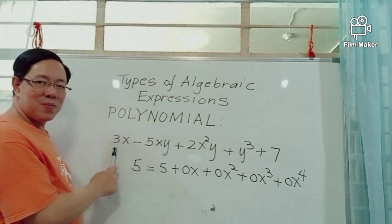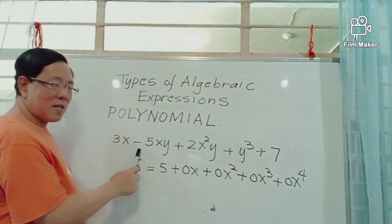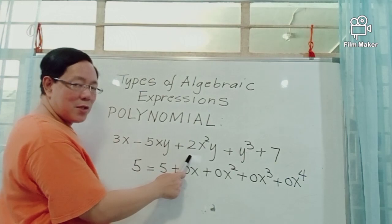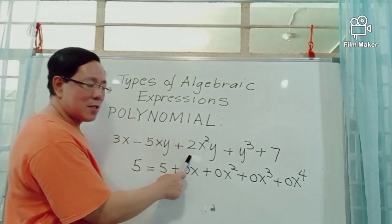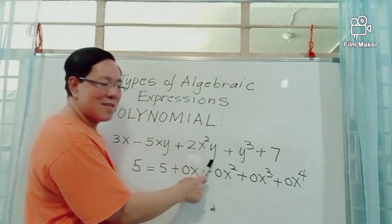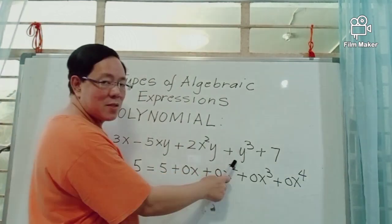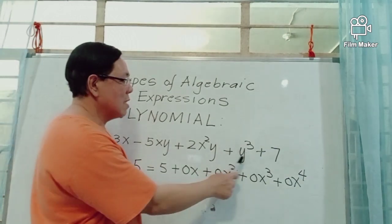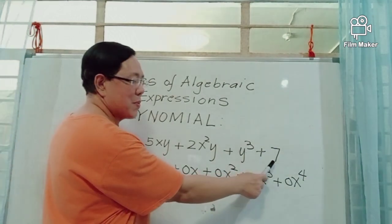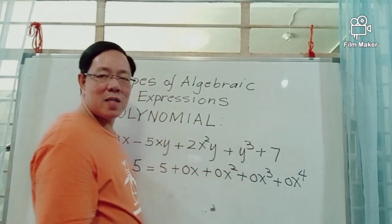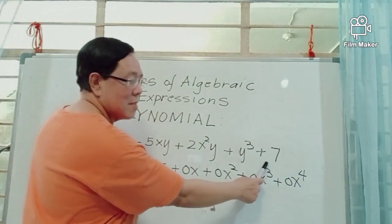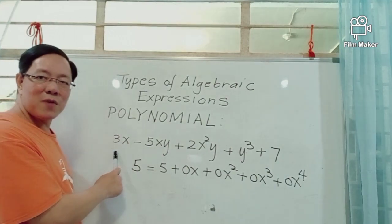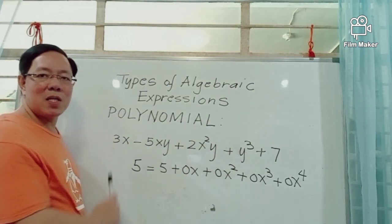In this polynomial, the first term is 3x, the second term is negative 5xy, the third term is 2x squared y, the fourth term is y cubed, and the fifth term is 7, which is a constant term. This algebraic expression with five terms is called a polynomial.